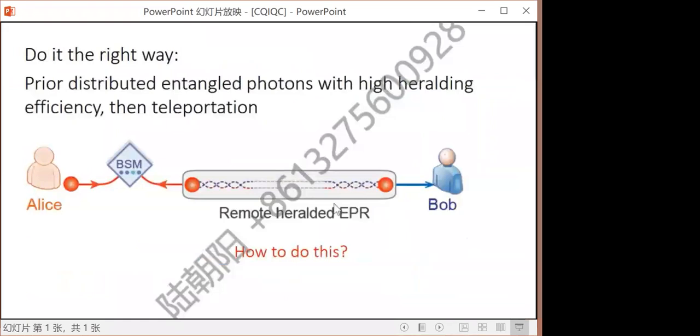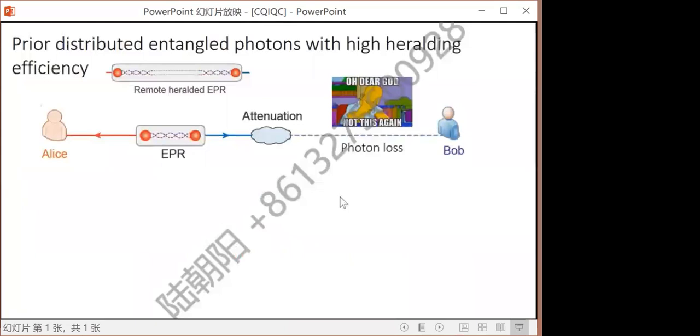The standard way to achieve teleportation advantage, we should, of course, distribute entangled photons with high heralding efficiency between Alice and Bob, which means if Alice has one photon, then definitely Bob should also get one correlated photon. We need to distribute over long distance, high heralding efficiency entangled photons. But if we simply send one of the entangled photons directly to Bob, to the remote Bob, then there's photon loss again.